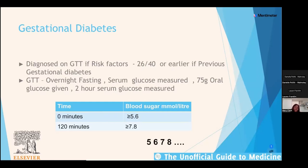For the GTT: the patient fasts overnight, serum glucose is measured on arrival, then 75 grams of oral glucose is given and a two-hour serum glucose is measured. A useful mnemonic is 5-6-7-8: a fasting glucose of 5.6 mmol/L or above diagnoses gestational diabetes, and a 120-minute glucose of 7.8 mmol/L or above also confirms the diagnosis.